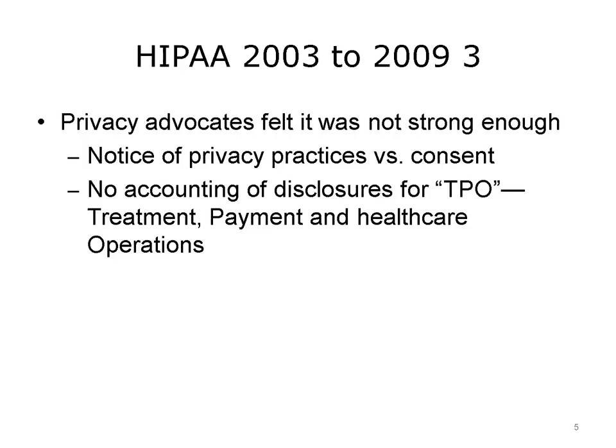In addition to the challenges of enforcement, other modifications over the years made many privacy advocates feel that the law was not strong enough. For instance, patients had to be provided with a notice of privacy practices that the healthcare facility followed. Patients had to indicate that they received the notice, but did not have to provide explicit consent to the practices. Privacy notices usually stated that the information could be shared for what is referred to as TPO — treatment, payment, and hospital operations such as quality improvement activities. Patients did not have to be notified when such sharing for TPO occurred.